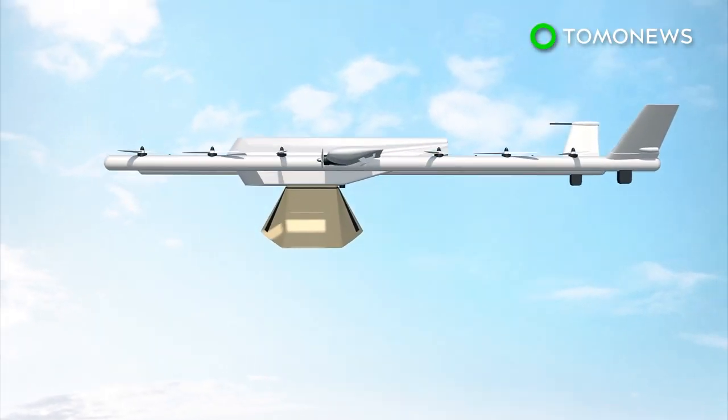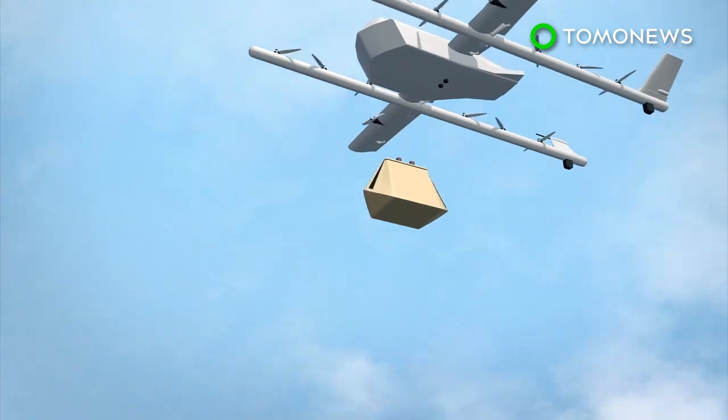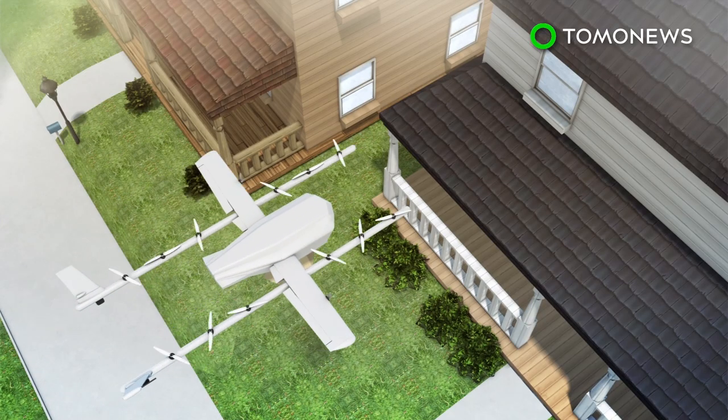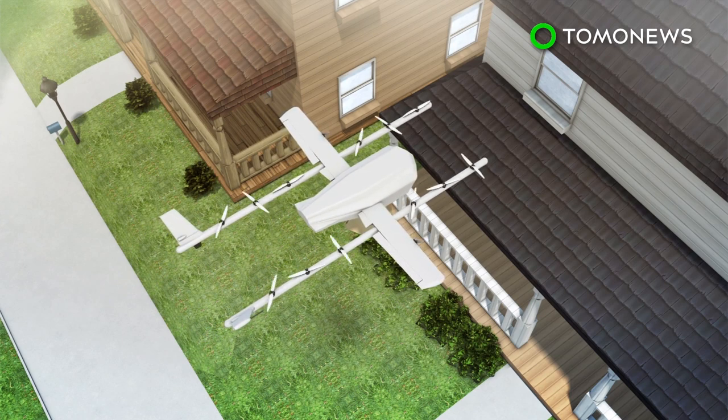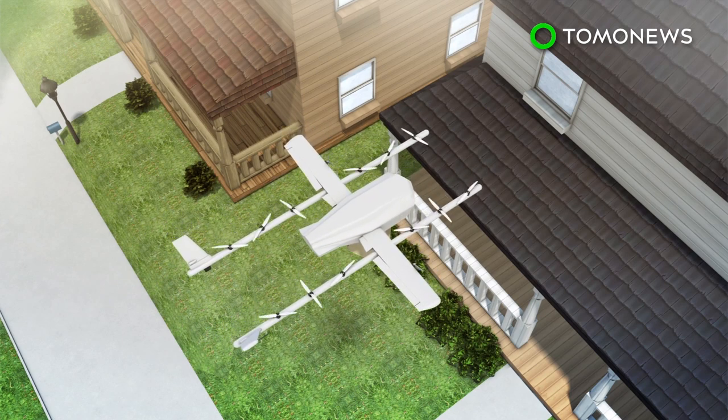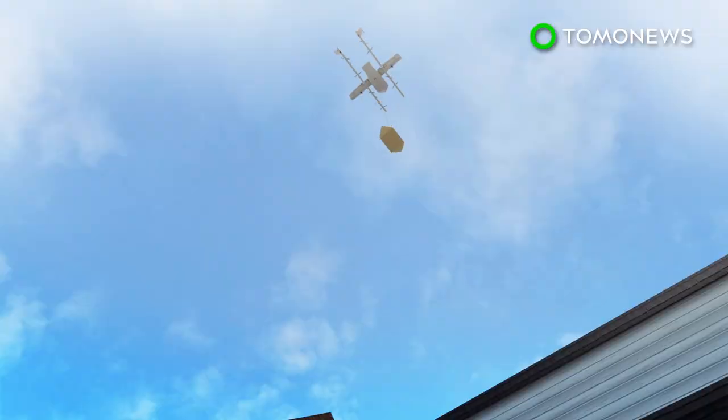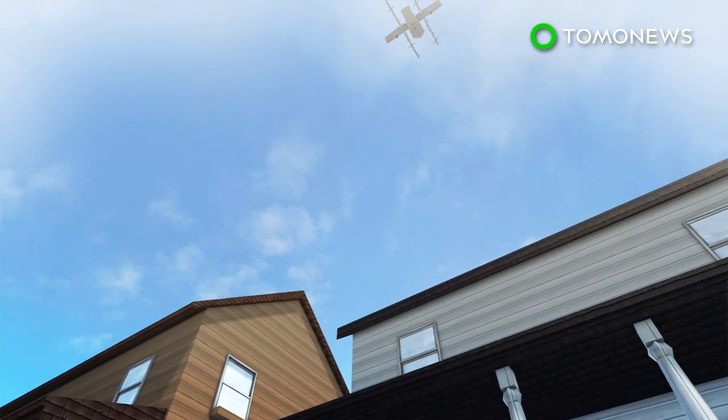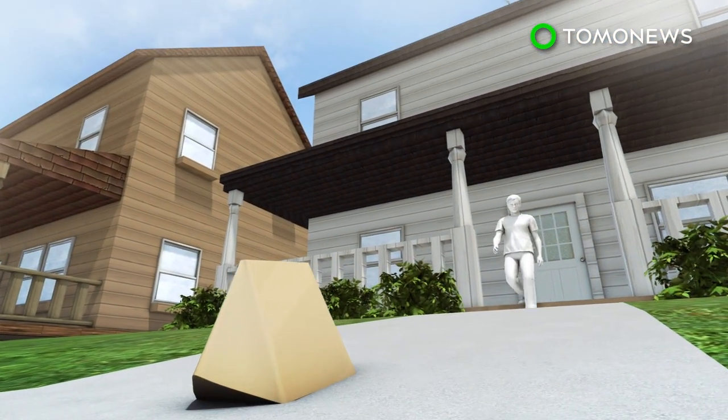According to Wing's website, each drone weighs about 5 kilograms and will be able to carry packages weighing up to 1.5 kilograms. The drones are able to fly roughly 20 kilometers per round trip. While delivering, the drone hovers around 7 meters above the ground and slowly lowers the package. Delivery goods are attached to a line. The package automatically disconnects from the line when the goods touch the ground and then the drone flies away, allowing the customer to pick up the package.